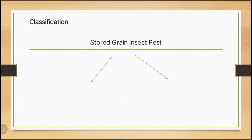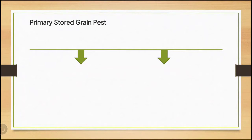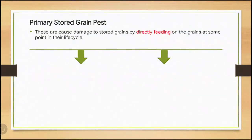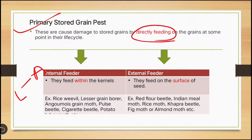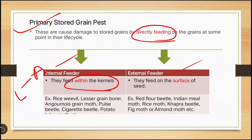Next we'll see the classification of stored grain insect pests. They are classified into primary storage pests and secondary storage pests. Primary stored grain pests are those that cause damage to stored grain directly by feeding on the grain at some point in their life cycle — either in larval stages or adult stages. They are known as primary stored grain pests. Primary stored grain pests have two types: internal feeders and external feeders. Internal feeders feed within the kernel — they stay inside the kernel and feed.